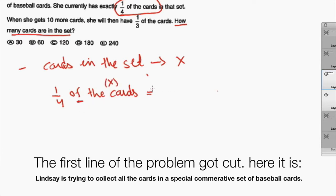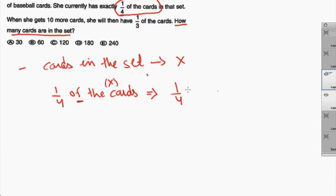So one-fourth times the cards and we said cards is X, the total number of cards is X. So basically when you translate this from English to math this means one-fourth times X. So this is the number of cards she currently has. That's the translation of the second sentence.